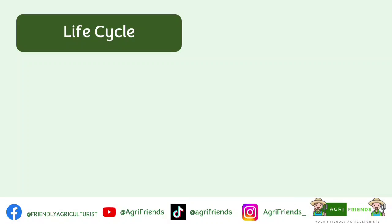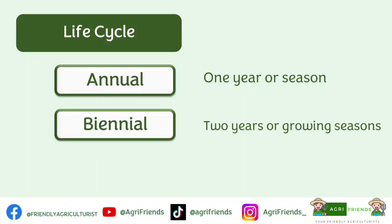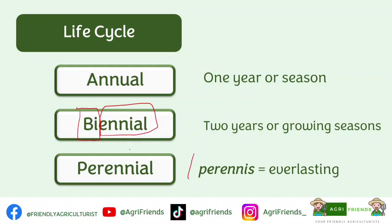Classification of crops based on life cycle — there are three. Annuals are plants that complete their life cycle in one year or less, or in one season. Biennials are crops that require two years or two growing seasons — from 'bi' meaning two, and 'annus' meaning year. Third are perennials — from the word meaning everlasting — these are plants that do not die after flowering and live from year to year.